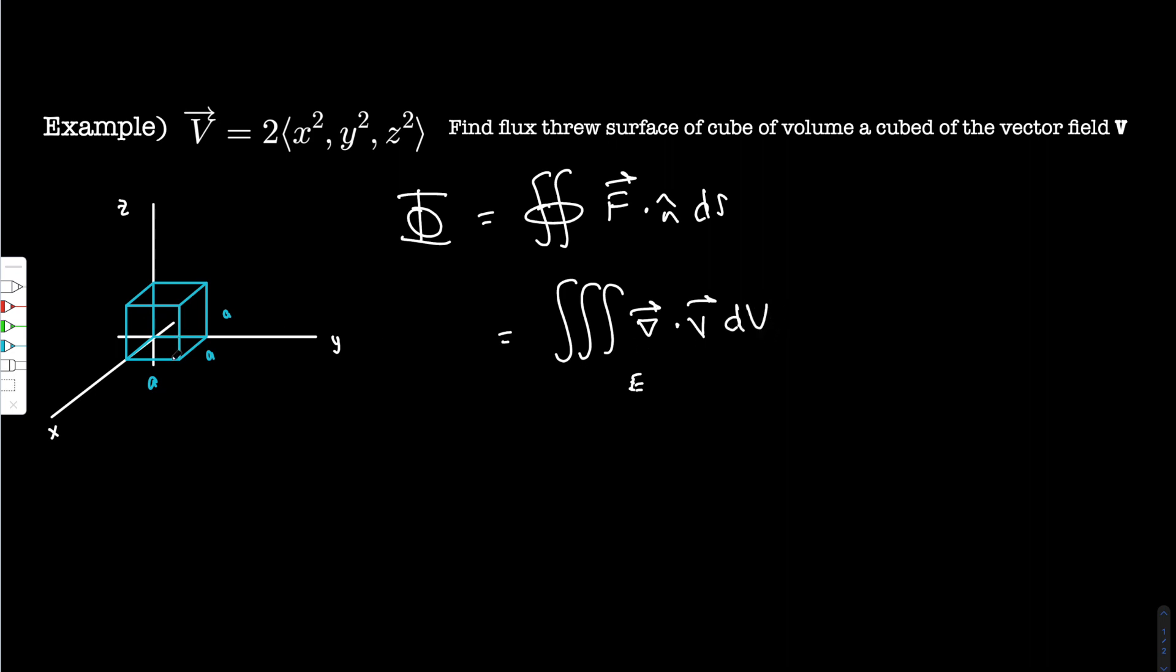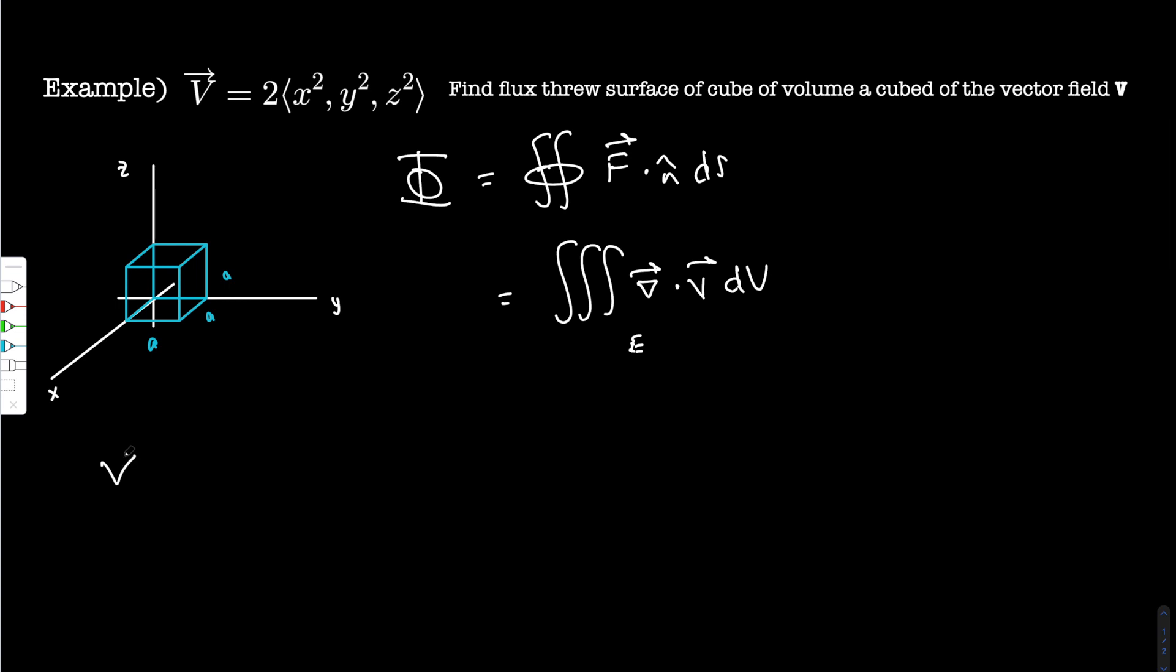Now this is obviously simple integral to do in Cartesian, right? So first let's compute the divergence of the field. So the divergence of the field v, the inner product of the partials. Okay, so that is the divergence of the field v.